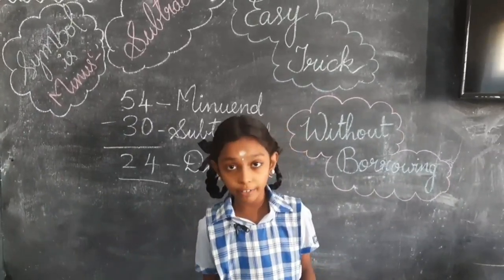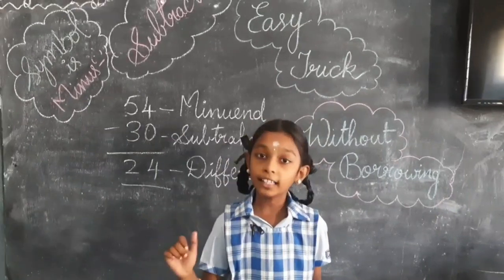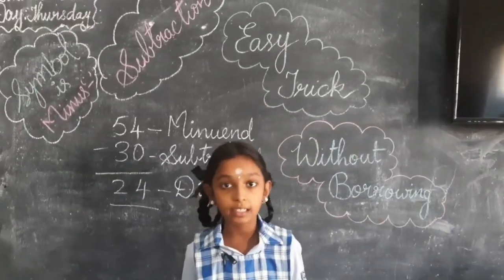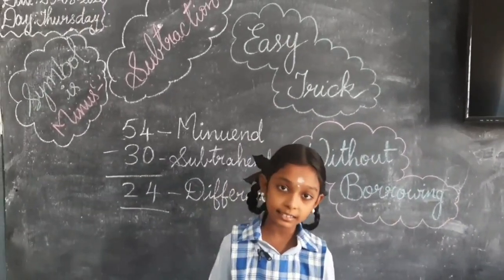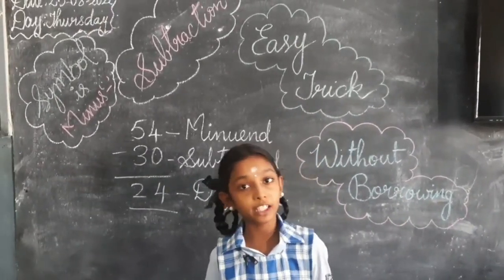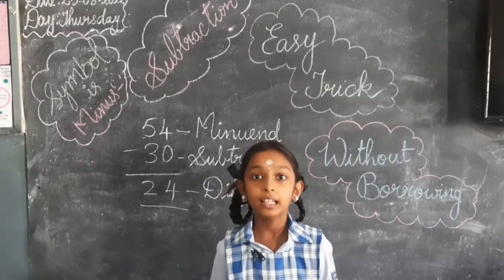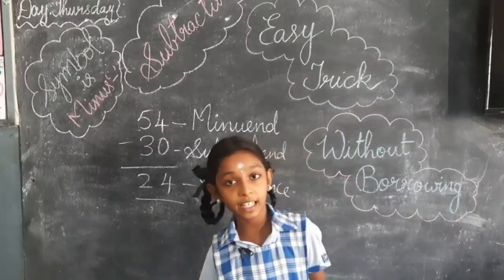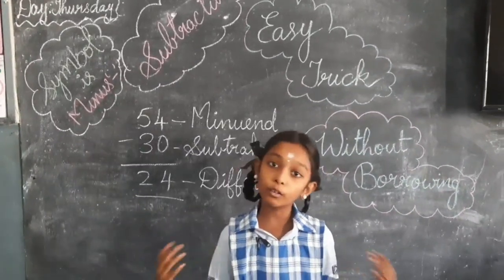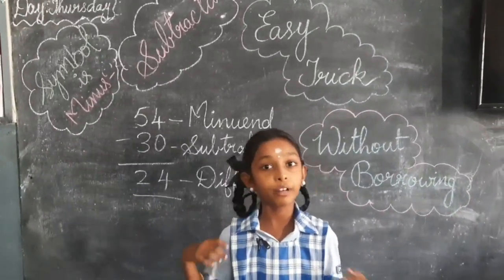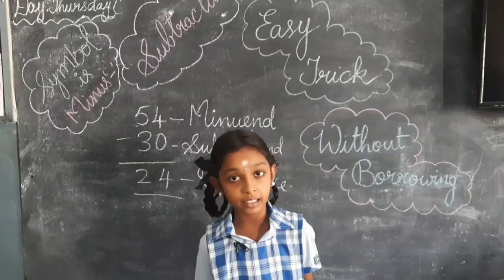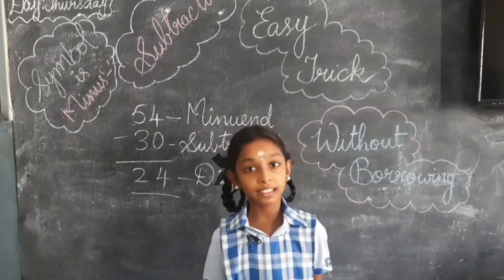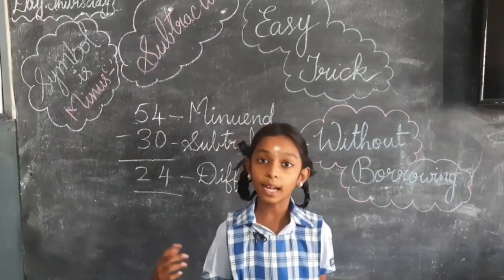Let me explain what is subtraction. Subtraction is an arithmetic operation that represents the operation of removing objects from a collection. The symbol of subtraction is minus.